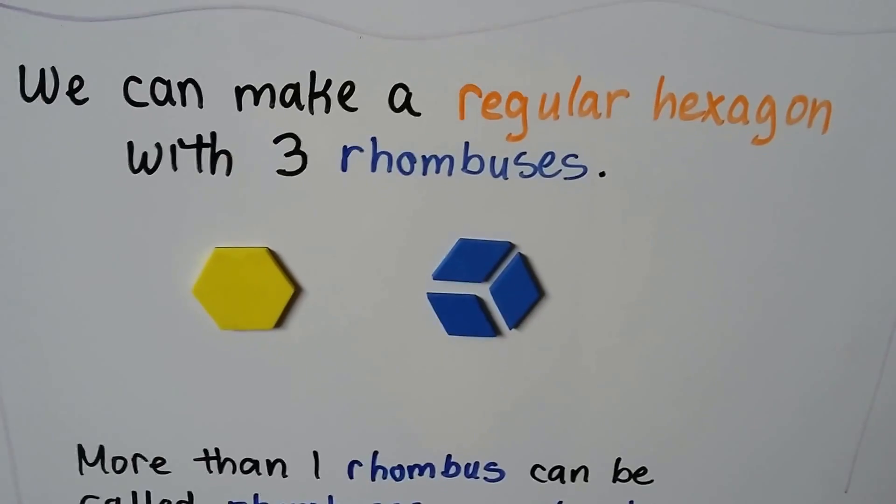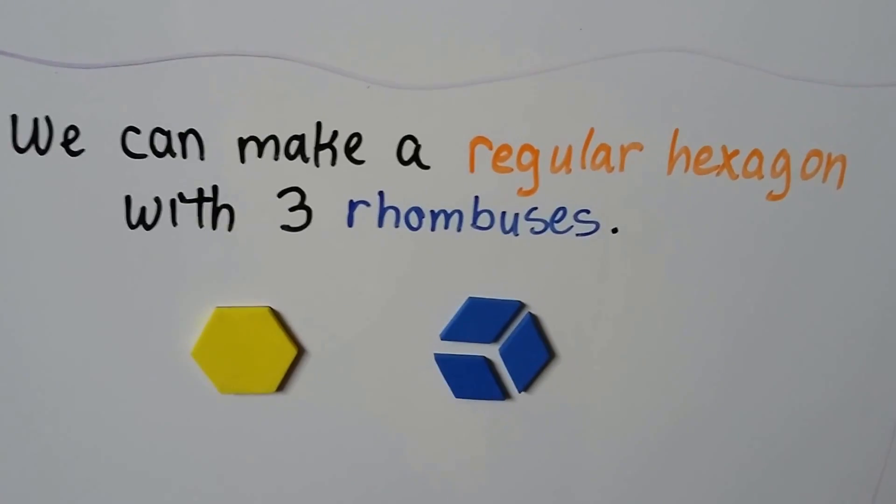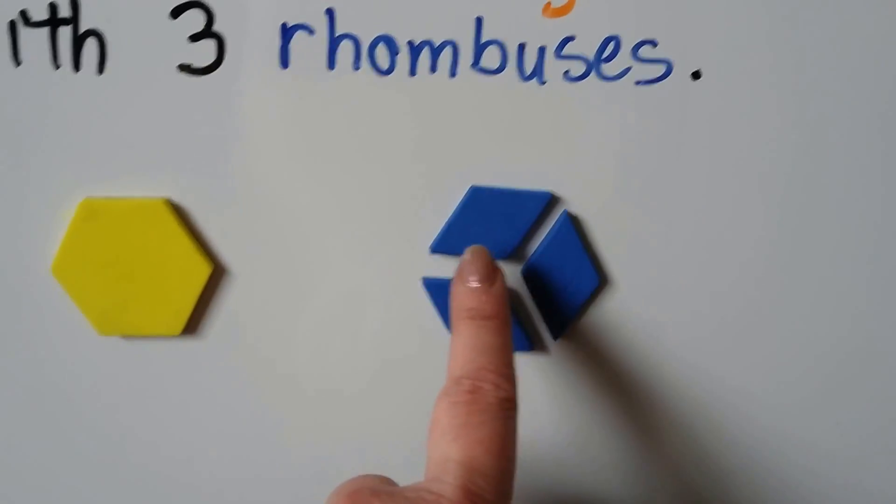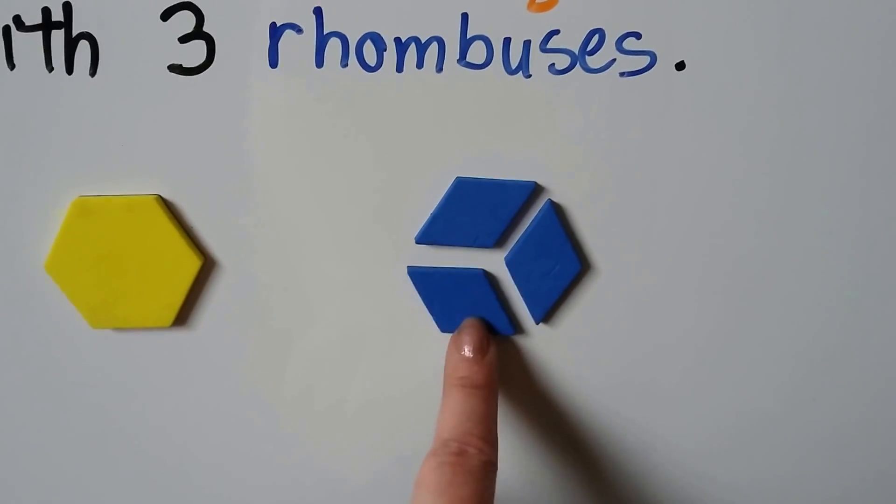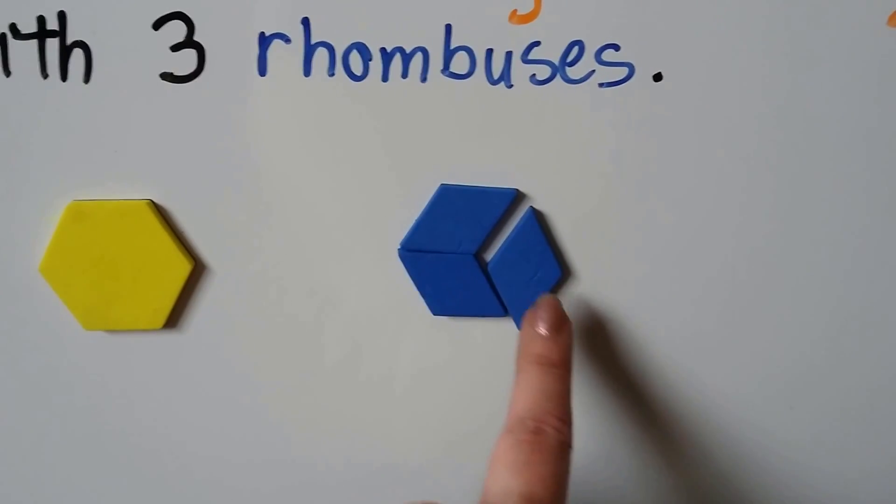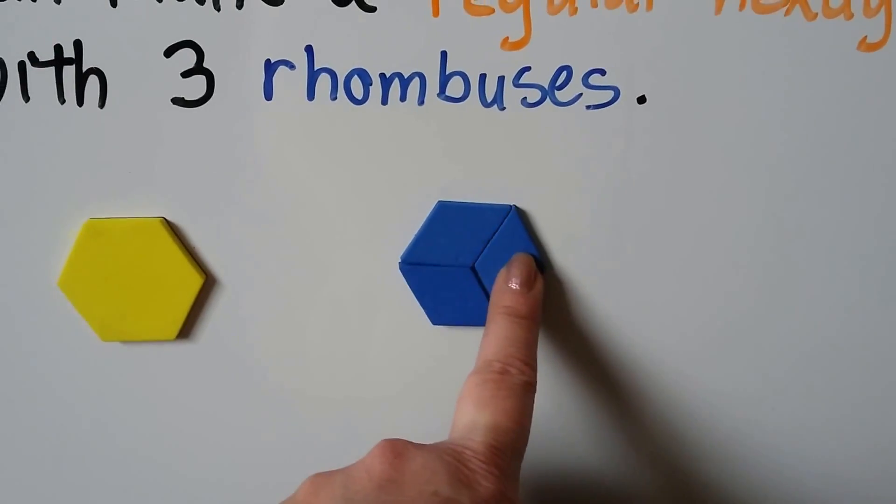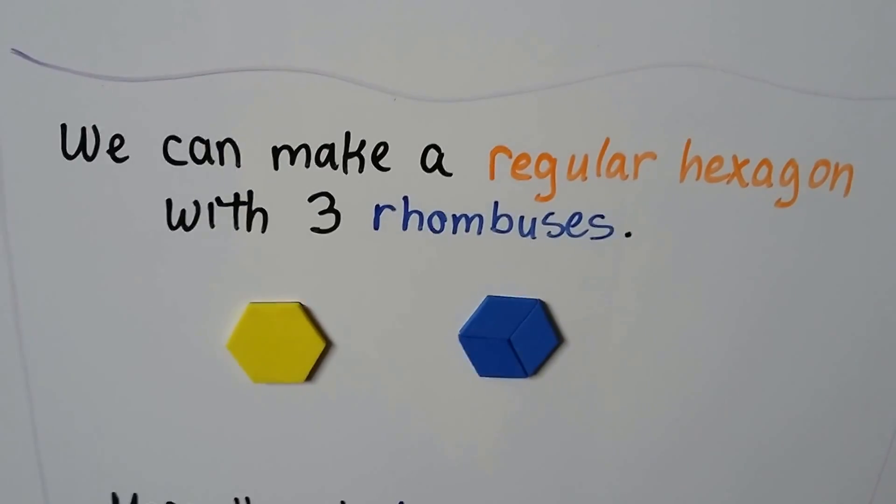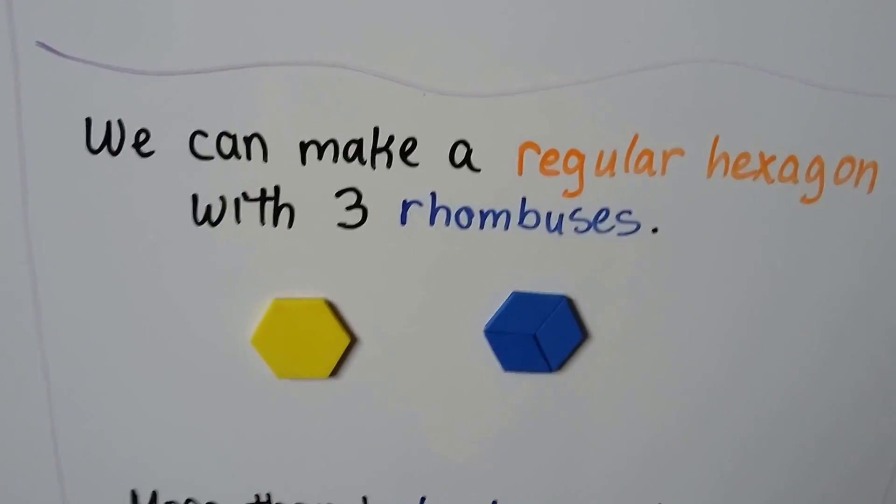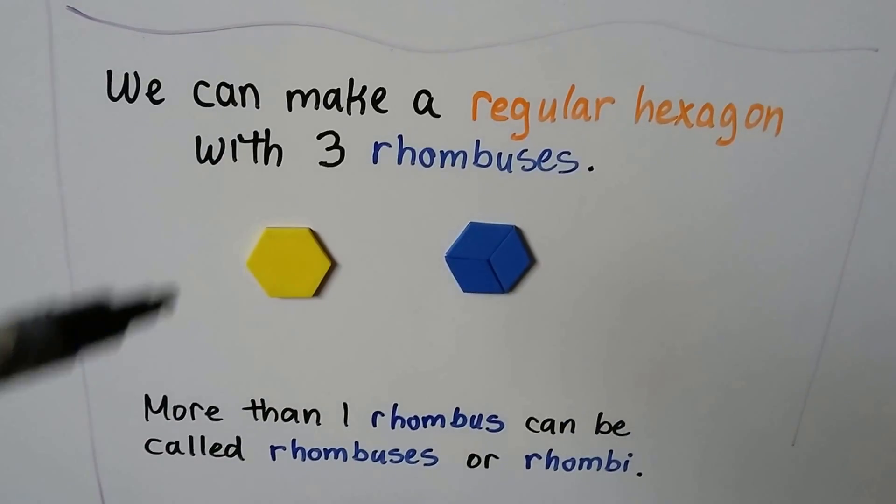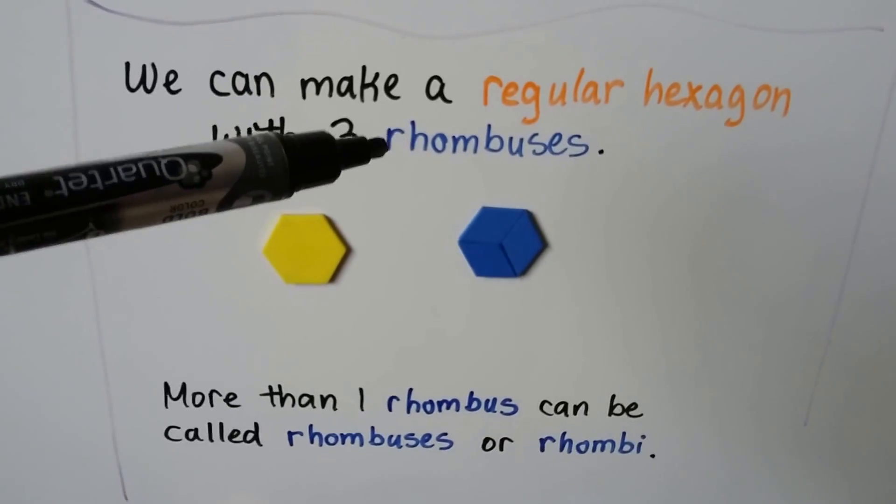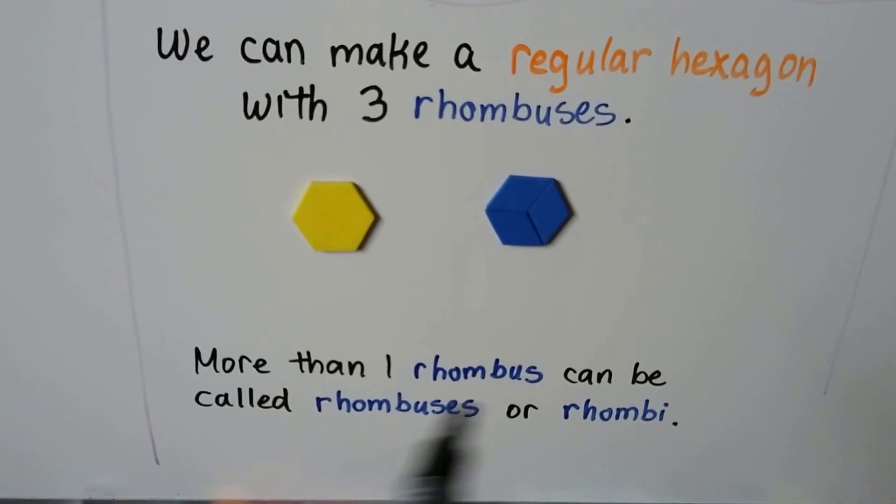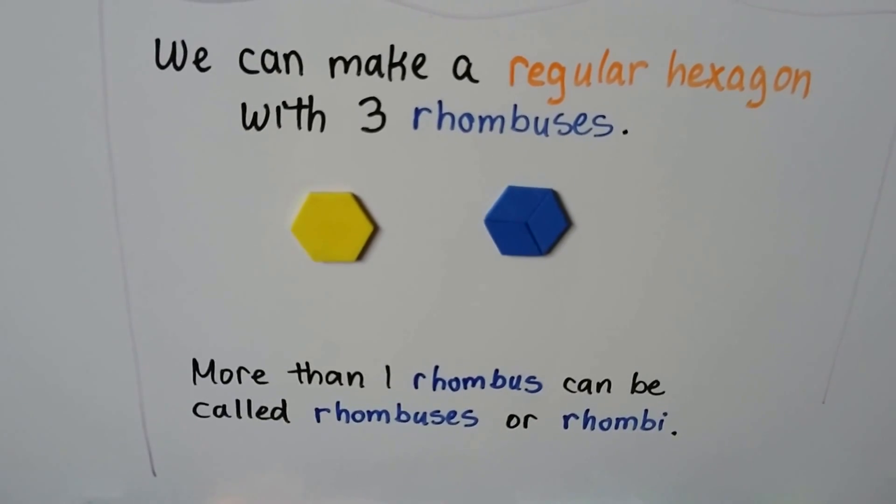We can make a regular hexagon with three rhombuses. We put one on its side like this, another one touching it like that, and then this one standing up like a diamond. See that? When we put them together, it makes a regular hexagon. Now we can call more than one rhombus, rhombuses. We can also call it rhombi. Either way is considered correct.